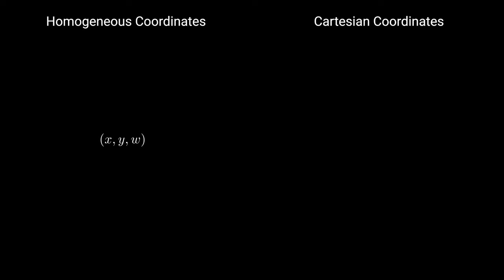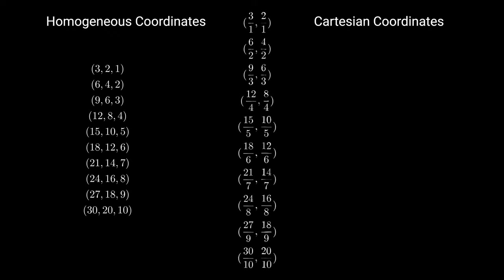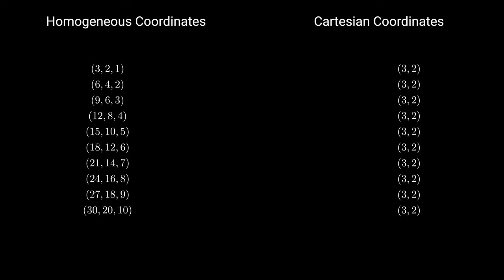A point XYW in homogeneous coordinates becomes a point X over W, Y over W in Cartesian coordinates. Suppose I have a bunch of points in homogeneous coordinates. It turns out they all refer to 3,2 in Cartesian coordinates. Meaning these points are homogeneous.